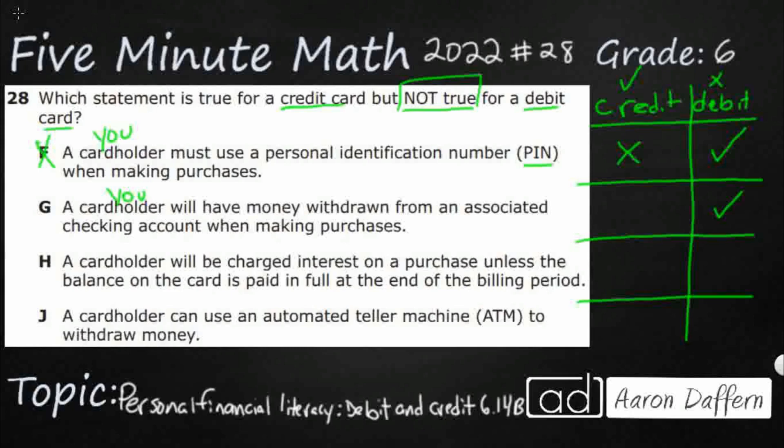That money is immediately moved by the end of the day. Whereas with a credit card, MasterCard, Visa, Discover, American Express — they're paying the store, and then you pay them back. So this is true for debit, not true for credit. That's the opposite of what we're wanting, so the answer is not G.